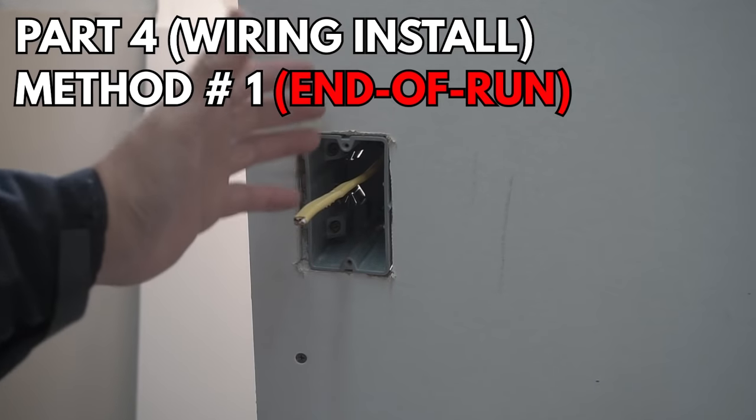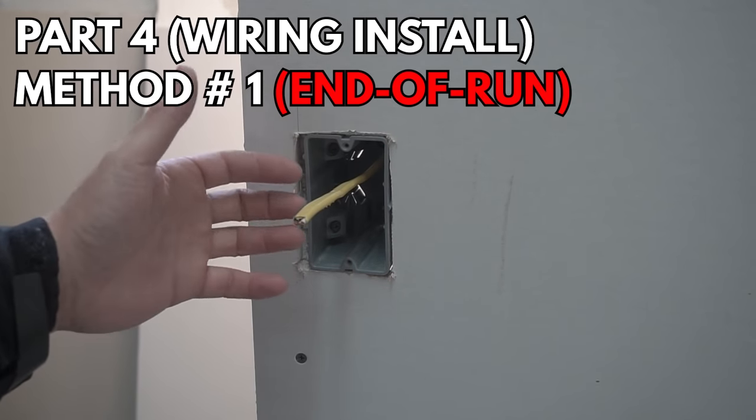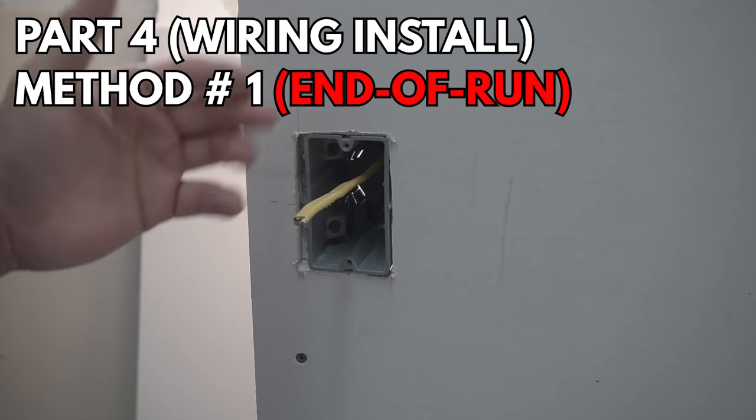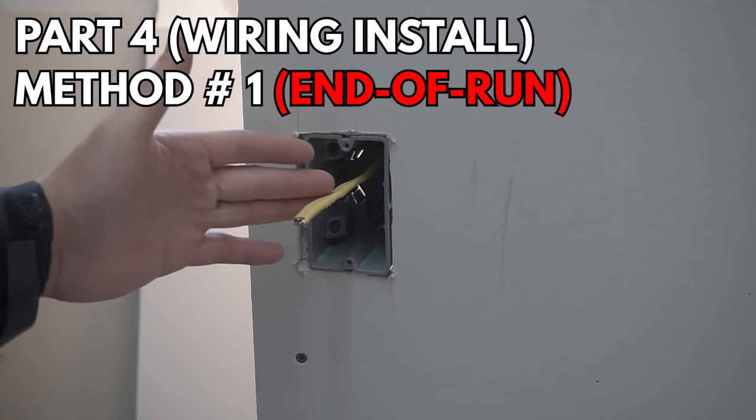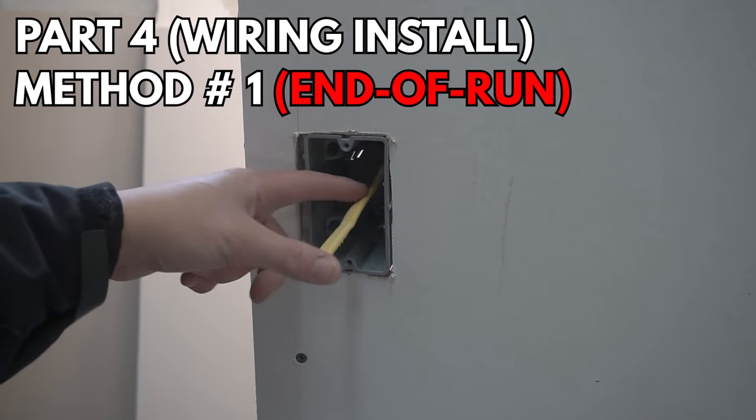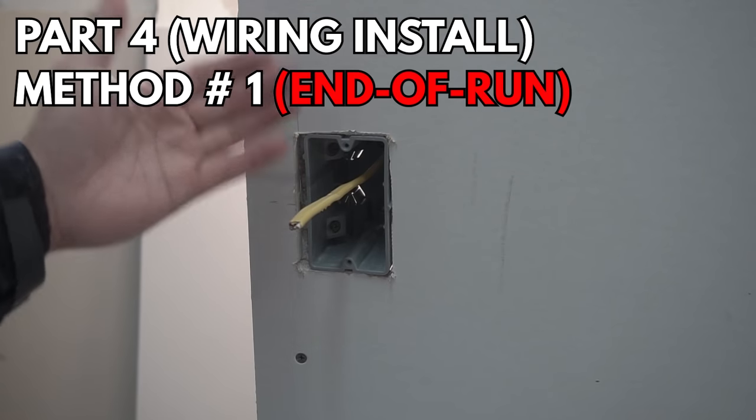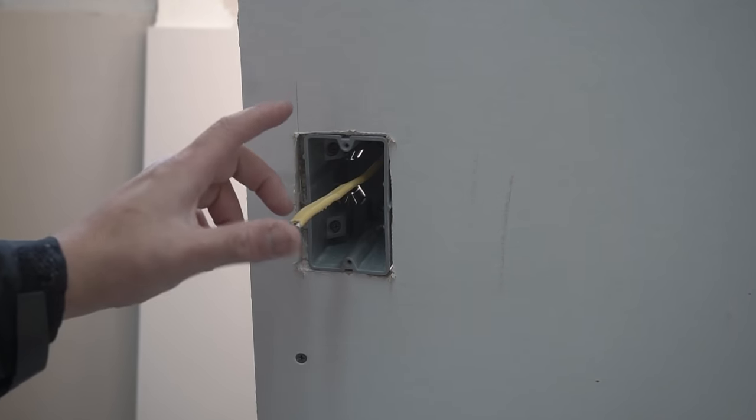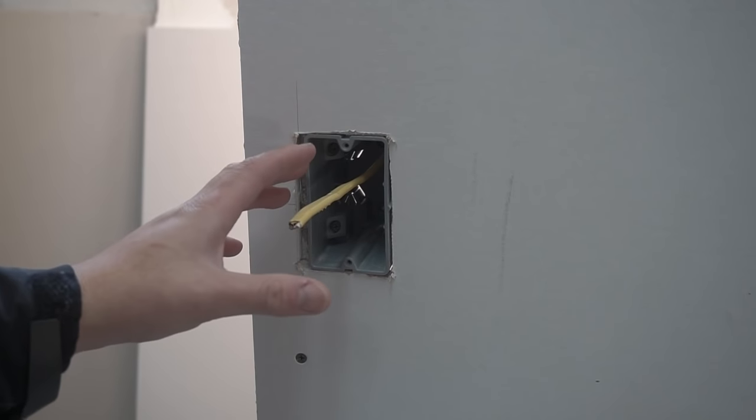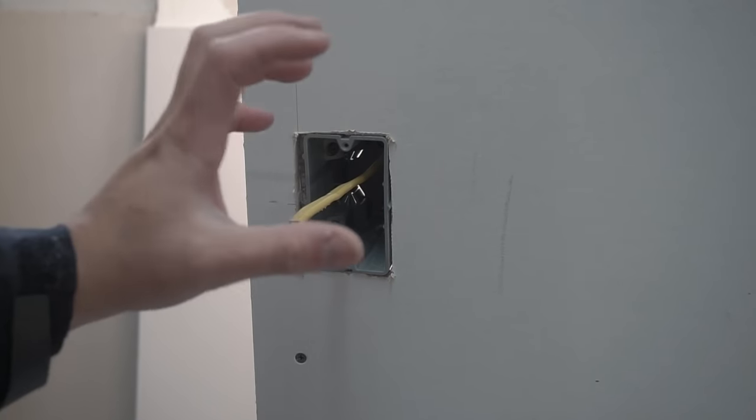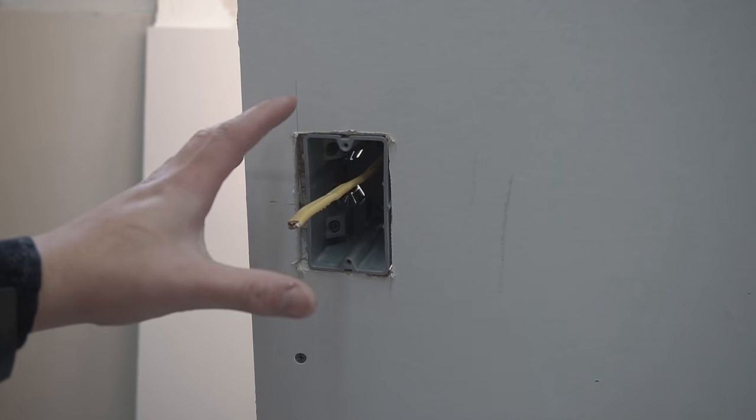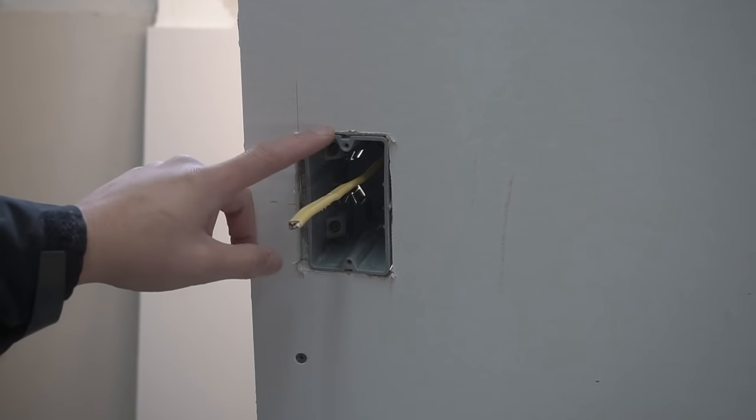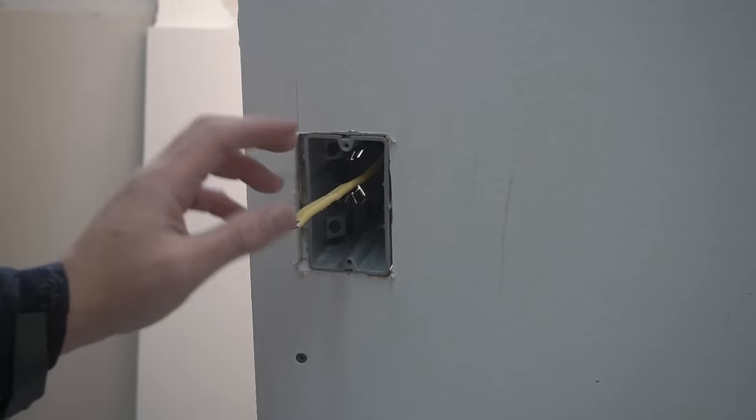There are two methods I'll be showing you for wiring this receptacle. The first method is called the end of run receptacle, meaning there's only one wire going through this box: one hot, one neutral, and one ground. The other method is the middle of run receptacle. First, let's do end of run.